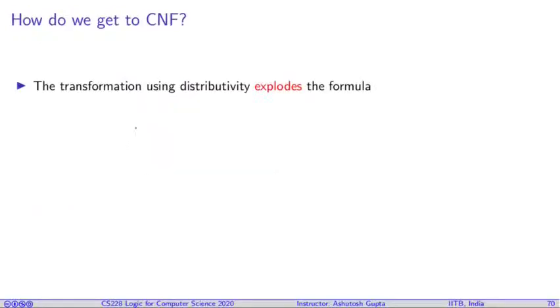So now the question is, how do we get to CNF? The transformation using distributivity, which we have seen, explodes the formula and therefore it's undesirable. Formulas become very large. So is there a way to avoid the explosion? Can we do something so that this explosion does not occur while we are trying to convert our formula into CNF?